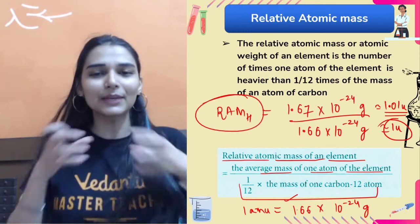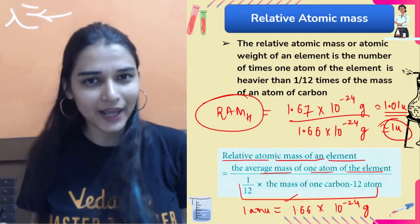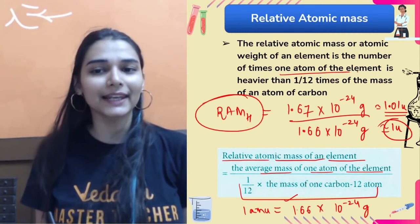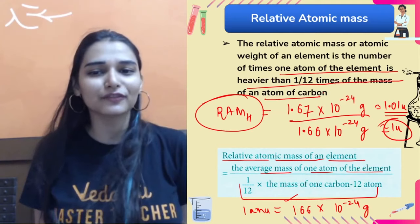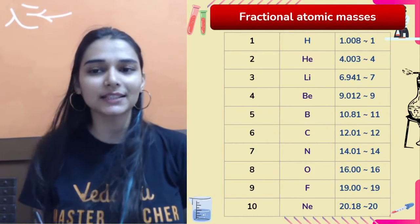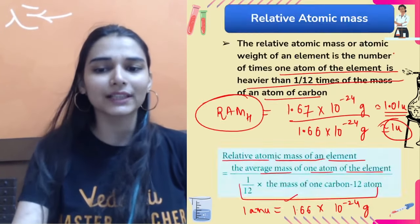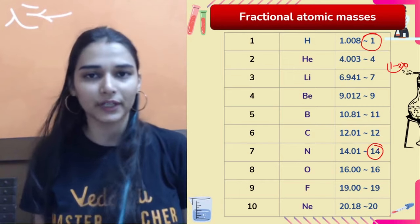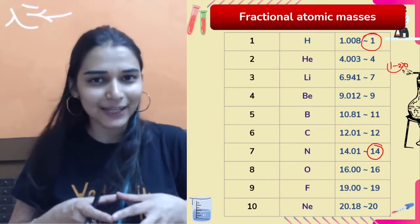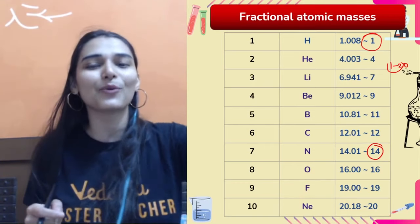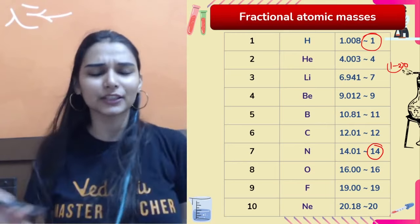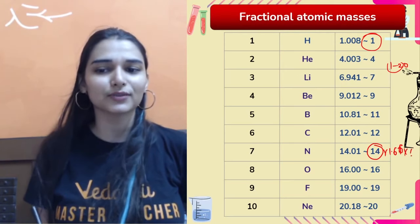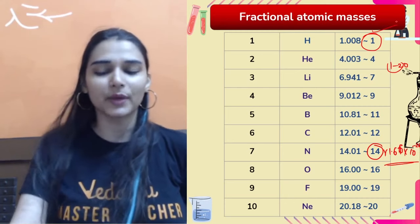So relative atomic mass of hydrogen is 1, meaning hydrogen's mass is equal to 1/12th of the mass of carbon-12. This tells us how many times one atom of an element is heavier than 1/12th of the mass of carbon-12. For nitrogen, atomic mass is 14 units, meaning one nitrogen atom is 14 times heavier than 1 AMU. Try to remember the atomic masses of the first 20 elements.